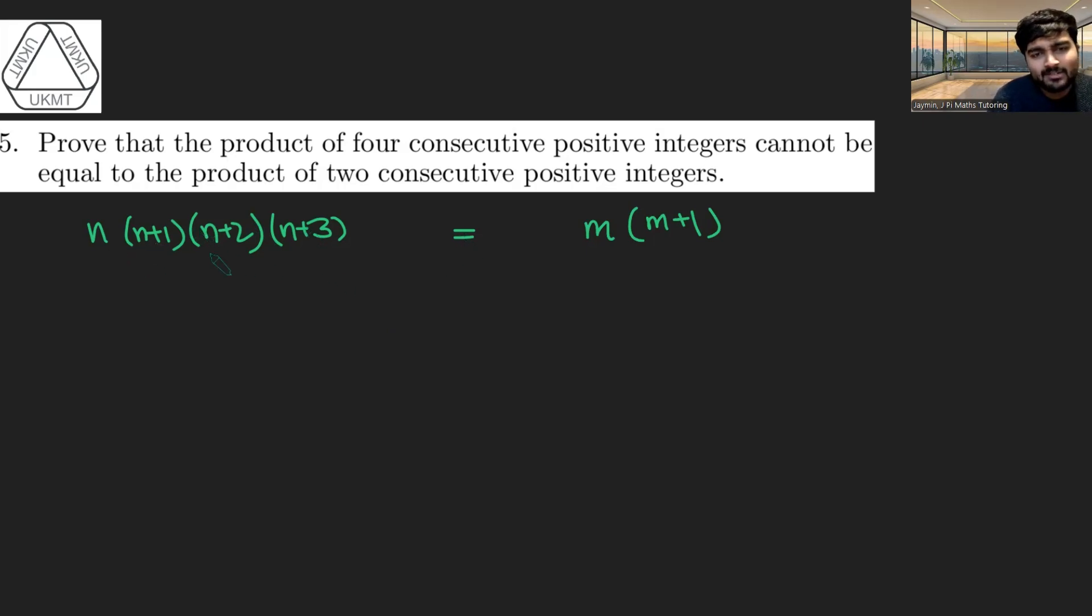But how about instead? Let's kind of partly expand this. Let's bring together the n and the n plus 3. That's going to give us n squared plus 3n. And if I bring those two together, that's going to give me n squared plus 3n plus 2 equals m squared plus m.